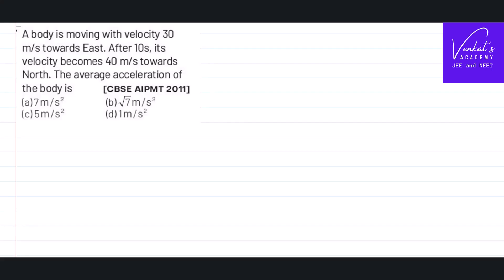It's time to understand what is given in this CBSE AIPMT 2011 question. A body is moving with a velocity of 30 meters per second towards East. Let's try to illustrate what that means by drawing a diagram.